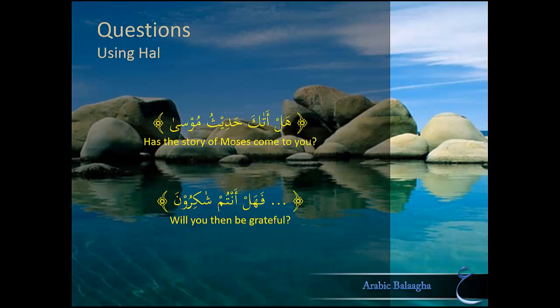The next interrogative word is هَلْ. هَلْ works similarly to the Hamza Maftooha. For example, هَلْ أَتَاكَ حَدِيثُ مُوسَى (Has the story of Moses reached you?) and فَهَلْ أَنْتُمْ شَاكِرُونَ (Will you then be grateful?). The first example is a verbal sentence and the second is a nominal sentence.